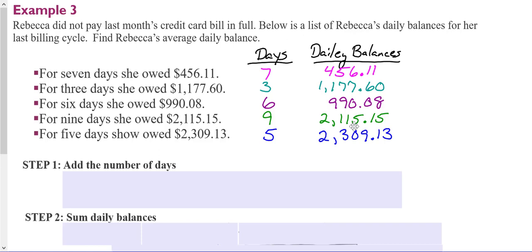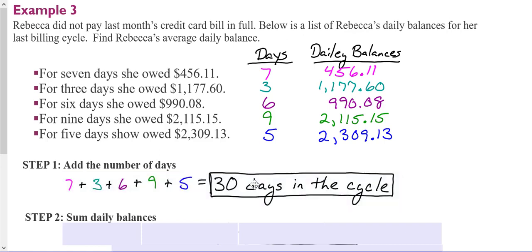The first thing you want to do when we're averaging things, we take the total and then we divide it by the number of items. So in this case, it would be the total of all of the daily balances divided by the number of days in the billing cycle. So the first thing we need to do is calculate how many days are in the billing cycle. You add all the days together and we end up with 30 days in the cycle, and this could change from month to month.